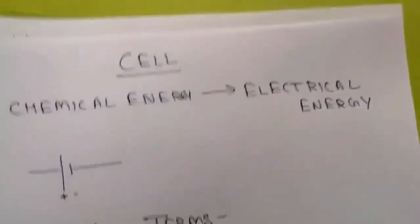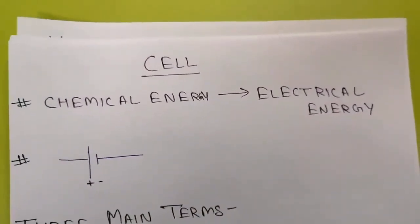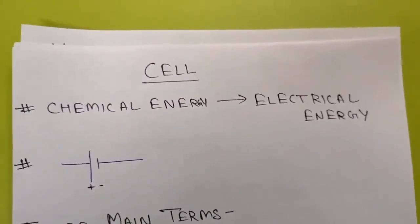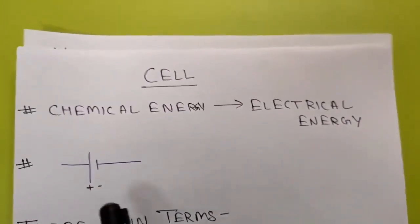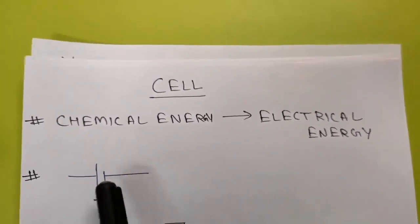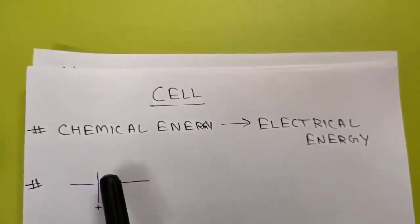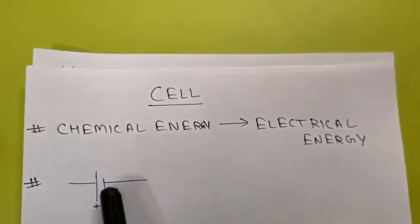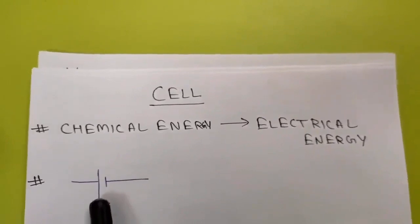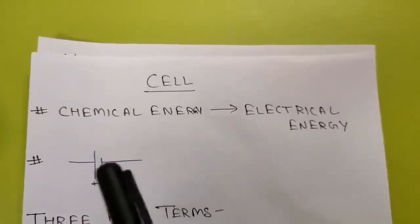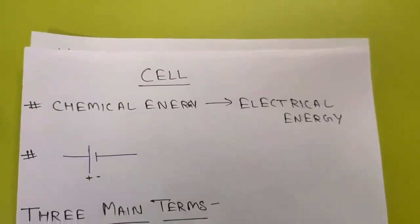The next topic is the cell. Basically, a cell is a device which converts chemical energy into electrical energy. This is the symbol of a cell — this is the positive electrode and this is the negative electrode. These two are called electrodes. The bigger one represents the positive electrode and the smaller one represents the negative electrode.